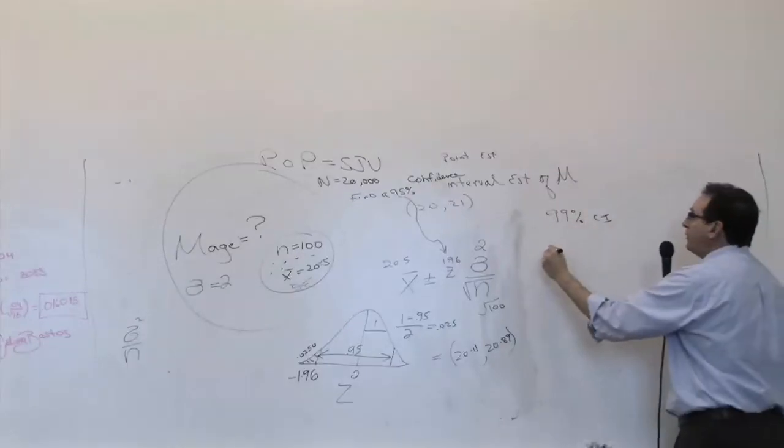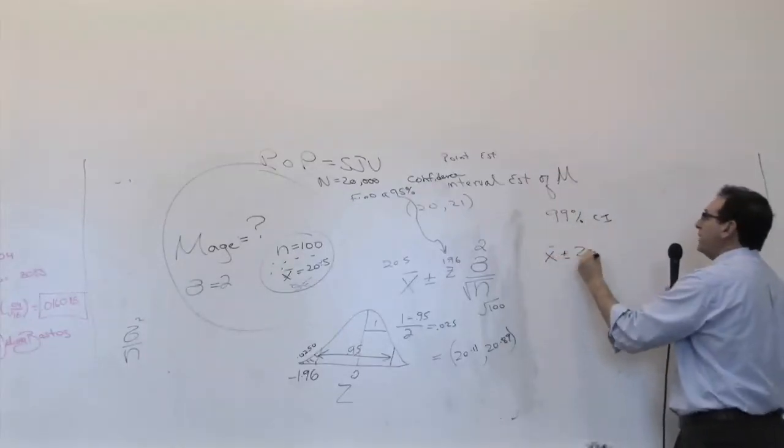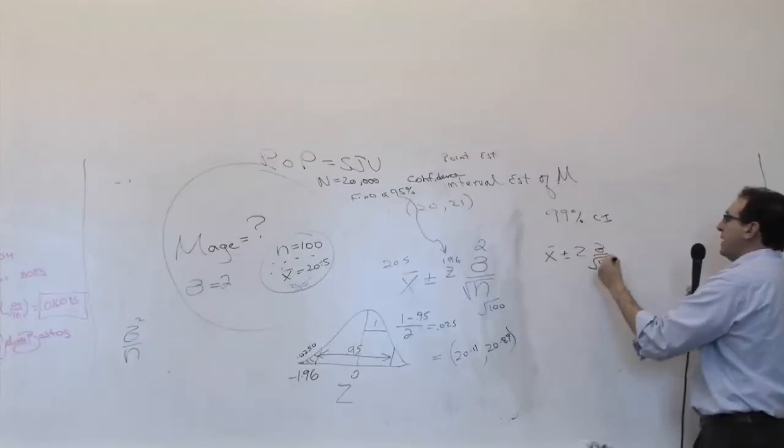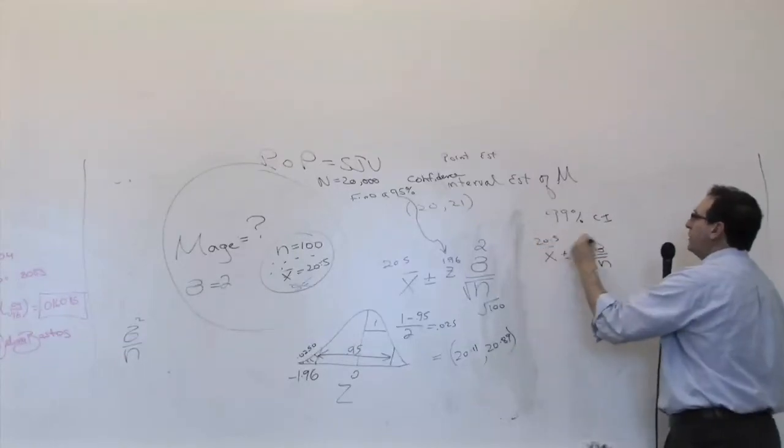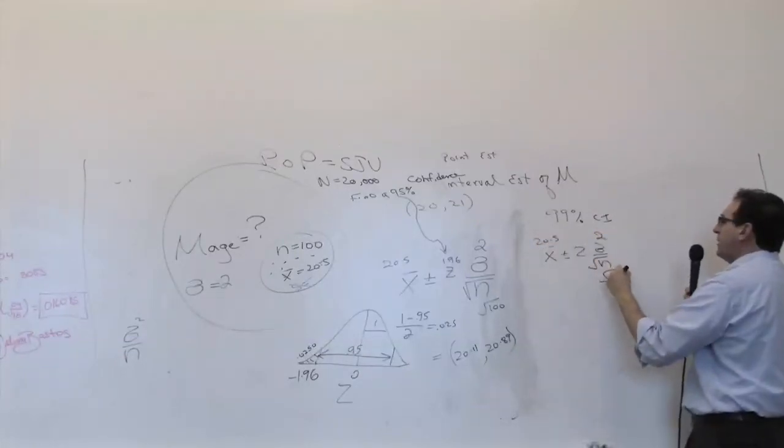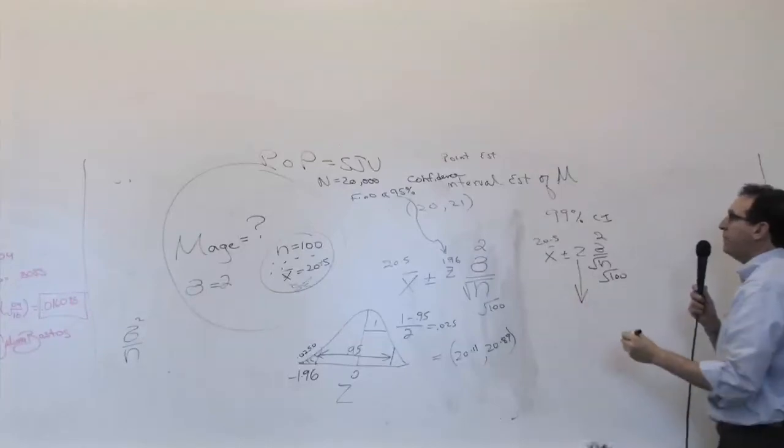So basically, you whip out your formula, which is this really simple formula, an illogical formula. The x-bar is still 20.5. The sigma is still 2. The n is still 100. The only question is, what's the z going to be when it's 99%?